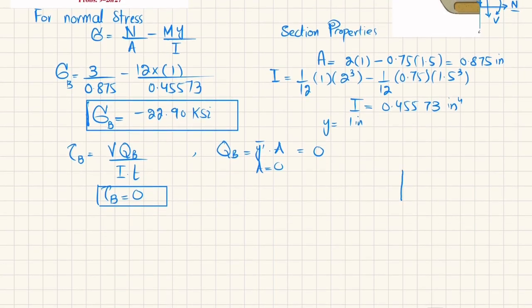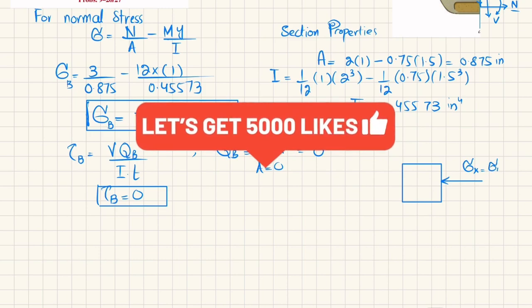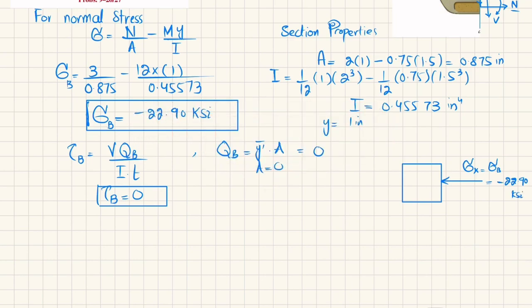Drawing the state of stress element: only stress in the x-direction is present, which is compressive. So sigma_x equals minus 22.90 ksi, sigma_y equals 0, and tau_xy equals 0.